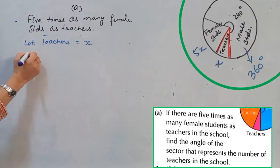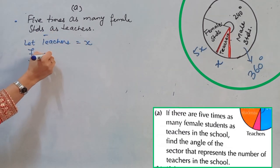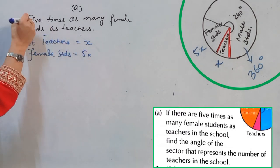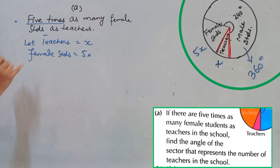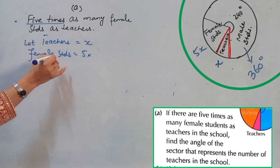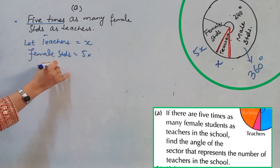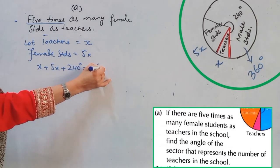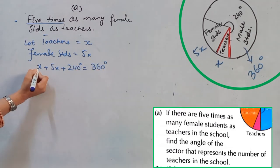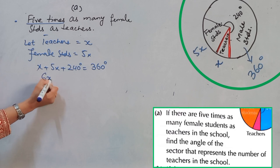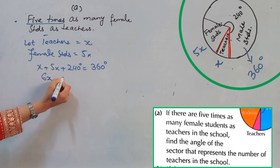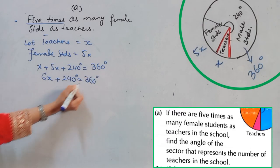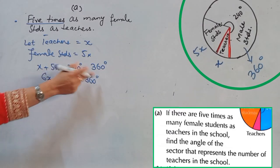As I have explained, let's take the angle of sector representing teachers as x. So the angle of sector representing female students will be 5x. Now, x plus 5x plus 240 — for male students — equals 360 degrees complete.